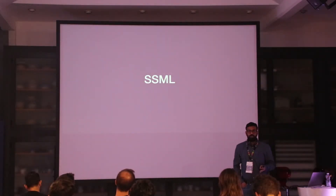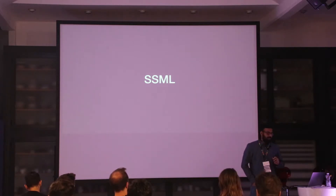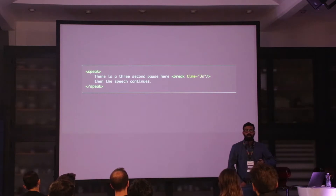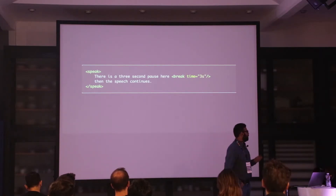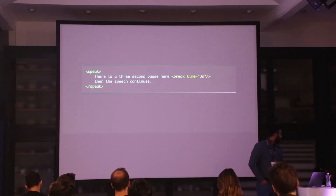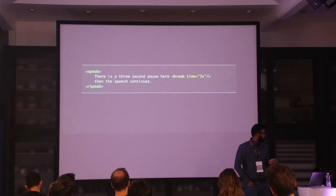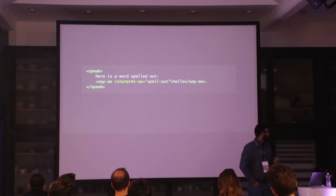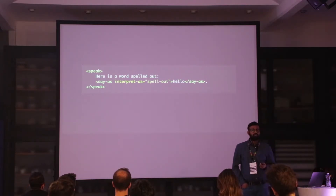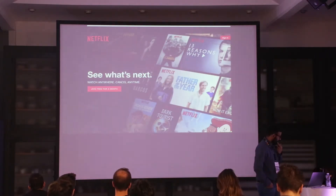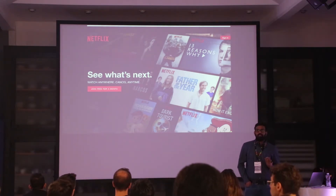Since we have a lot of developers here, how many of you know there's SSML for voice interfaces? It's Speech Synthesis Markup Language — you could use it today for Amazon Alexa and also for Google Assistant. Basically you can add a pause: there is a three-second pause here, then the speech continues. And in this case where you want to spell something out: H-E-L-L-L. So we have more control over the voice.